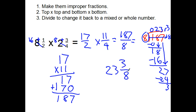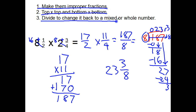For the ones we did, there were hardly any that you had to simplify. Remember the steps when multiplying mixed numbers: make them improper fractions, then do top times top and bottom times bottom, and finally divide to change it back to a mixed or whole number — it could be either one.